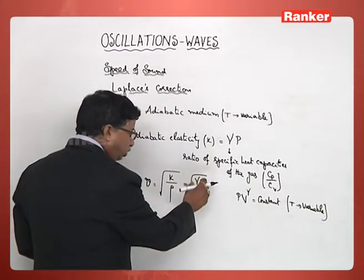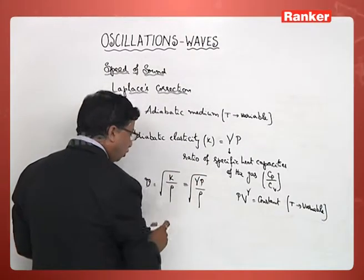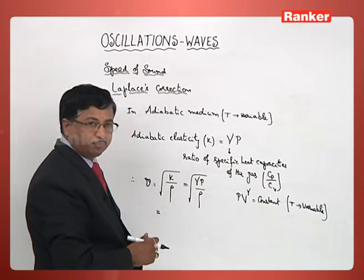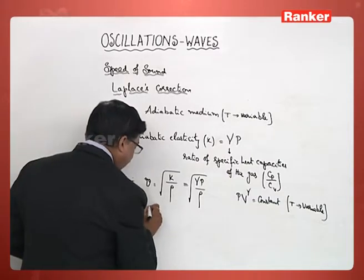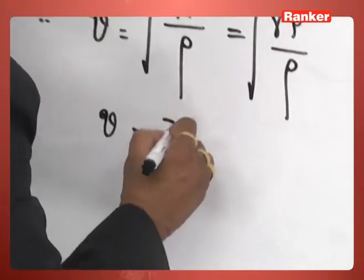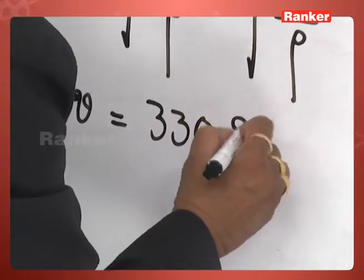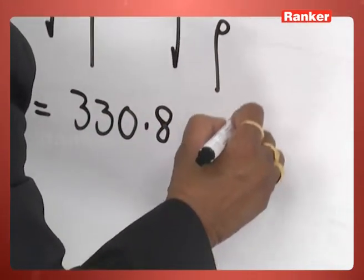Considering the values of gamma P and rho, they have once again estimated the velocity of sound in air at 0 degrees. This time, the velocity they got was 330.8 meters per second nearly.